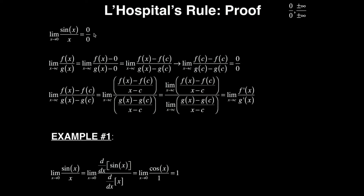This 0 over 0 is what we call indeterminate form, and there are a lot of kinds of indeterminate forms. The two most common you'll run into in calculus are 0 over 0, and plus or minus infinity over plus or minus infinity. This particular one has the form 0 over 0, and that's the form we're going to use to do the proof of L'Hôpital's rule.